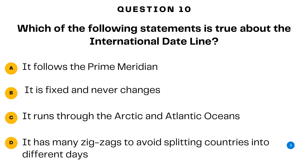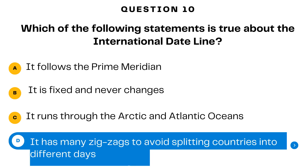Last question — question number ten. Which of the following statements is true about the international dateline? A. It follows the prime meridian. B. It is fixed and never changes. C. It runs through the Arctic and Atlantic oceans. D. It has many zigzags to avoid splitting countries into different days. The answer is D — it has many zigzags to avoid splitting countries into different days. The international dateline has a zigzag pattern to avoid splitting countries into different calendar days.